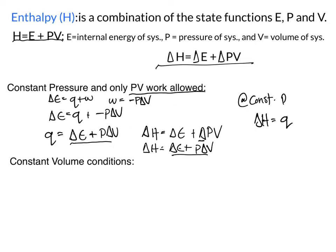This is a very useful relationship when dealing with constant pressure conditions. In chemistry, basically 99% of the chemistry you do is going to be at constant pressure. So the relationship between enthalpy and your heat transfer — heat either absorbed or released by the reaction — means they are equal to one another.